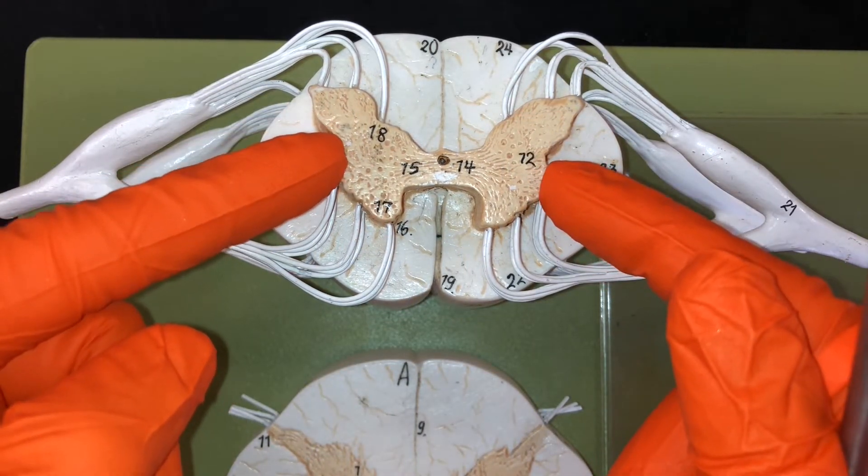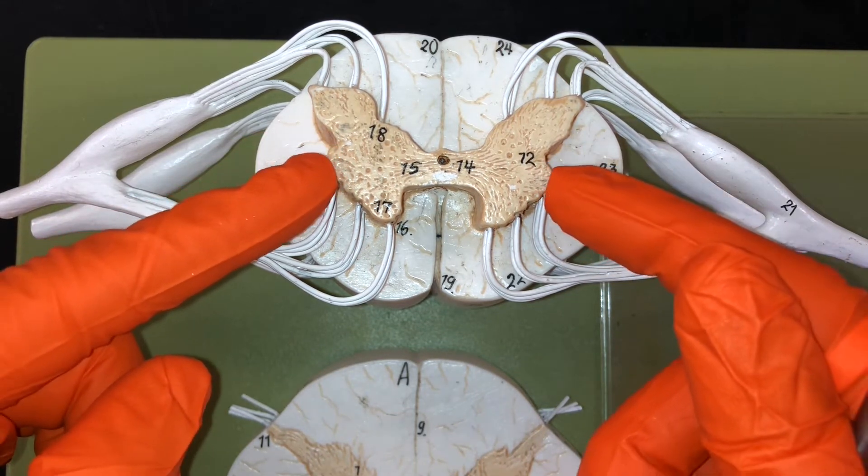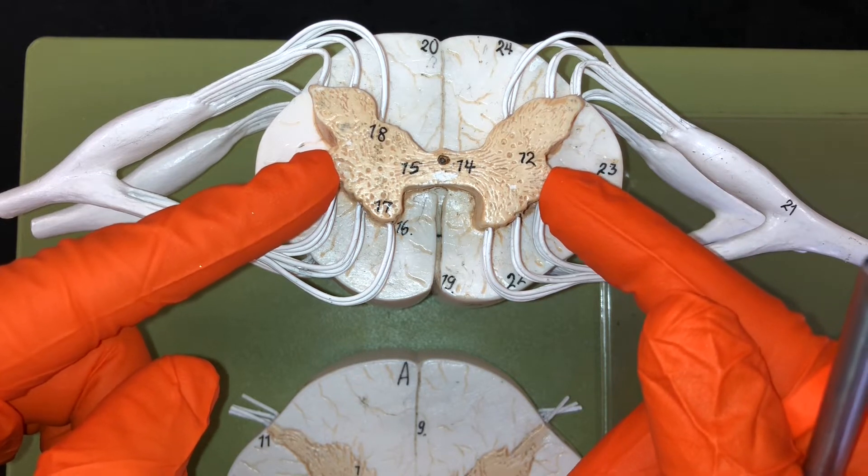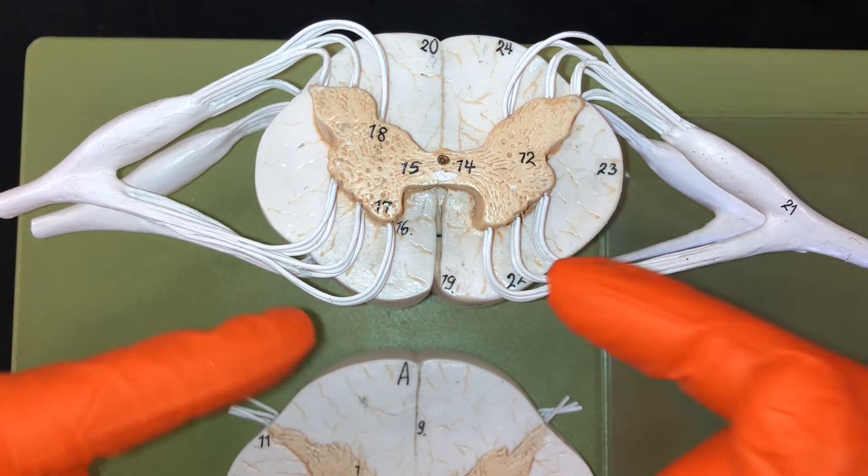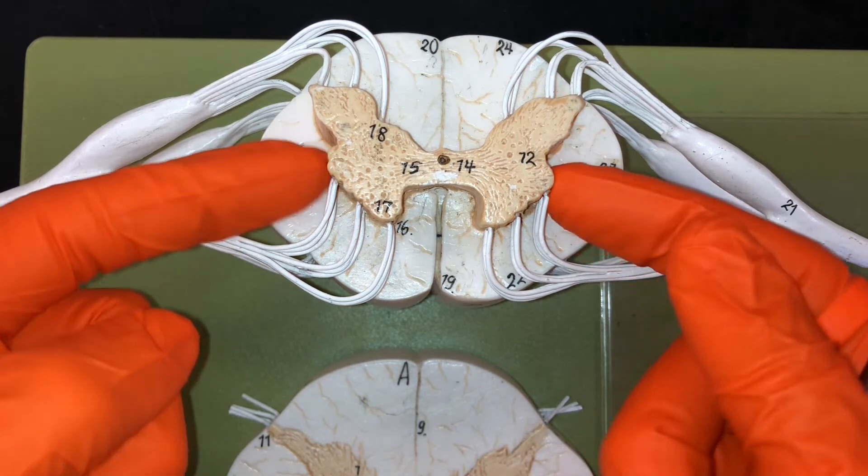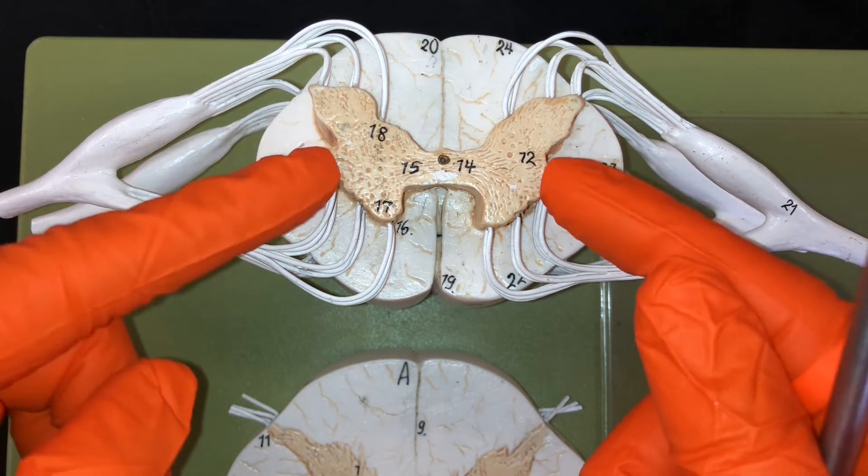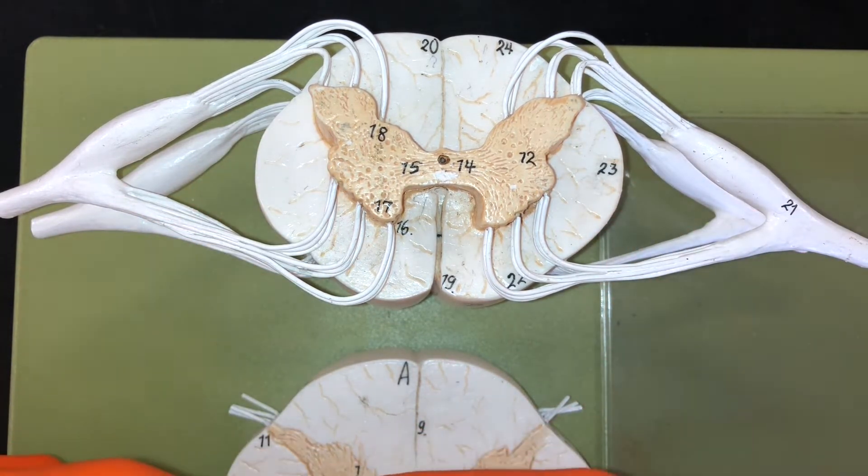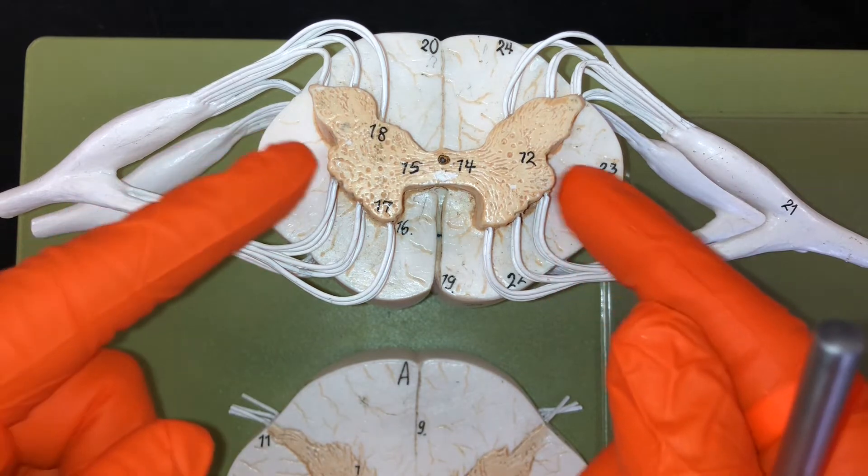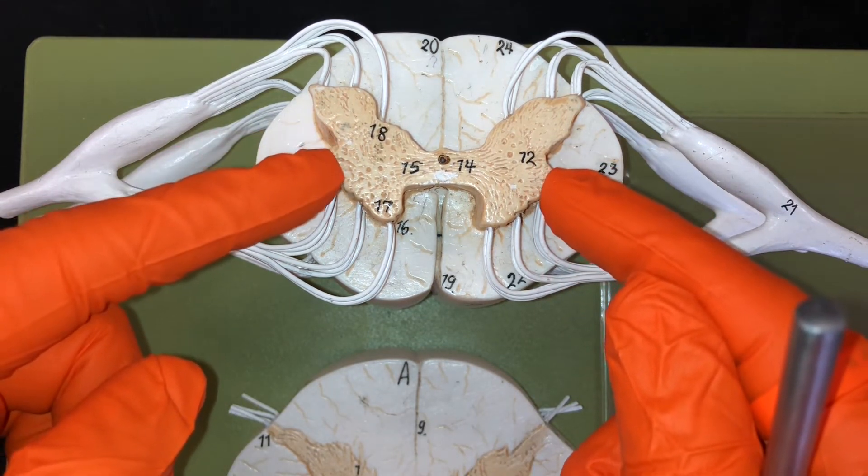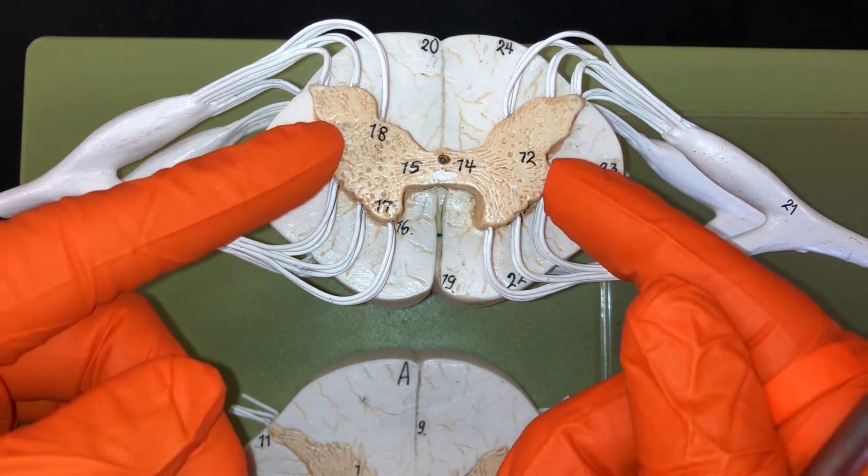Here we have the lateral gray horns. These are only found within the areas of the spinal cord within areas T1 through L2. Remember those abbreviations referred to the first thoracic vertebra through the second lumbar vertebra. So not every section of the spinal cord will have these lateral horns. These lateral horns are made up of the dendrites and cell bodies of autonomic motor neurons. These areas will eventually extend to and innervate areas such as cardiac muscle and the smooth muscle of the stomach.